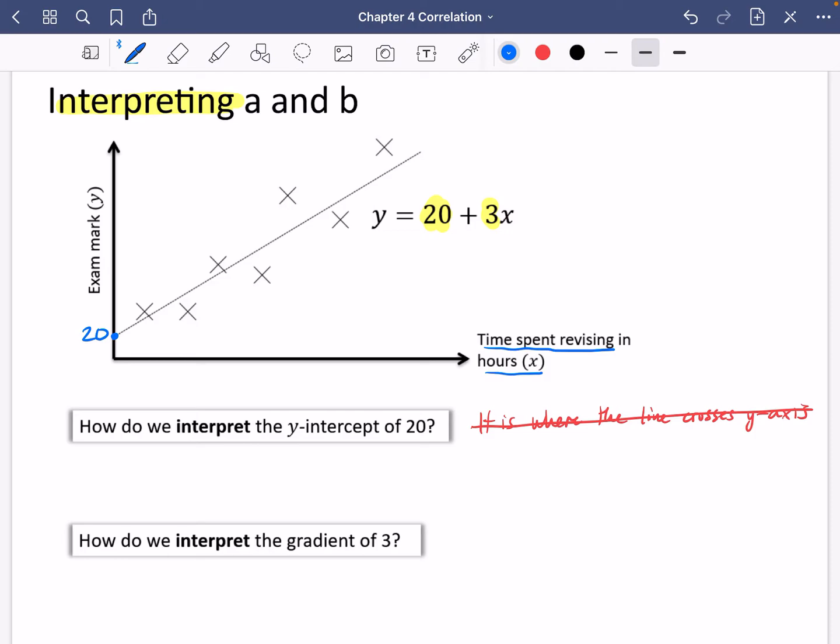So how do we interpret the y-intercept of 20? This is the mark we would expect someone to get if they did zero hours or no revision. So explain it. What does this 20 mean? Well, it means if x was zero, that would be the mark that we would expect someone to get.